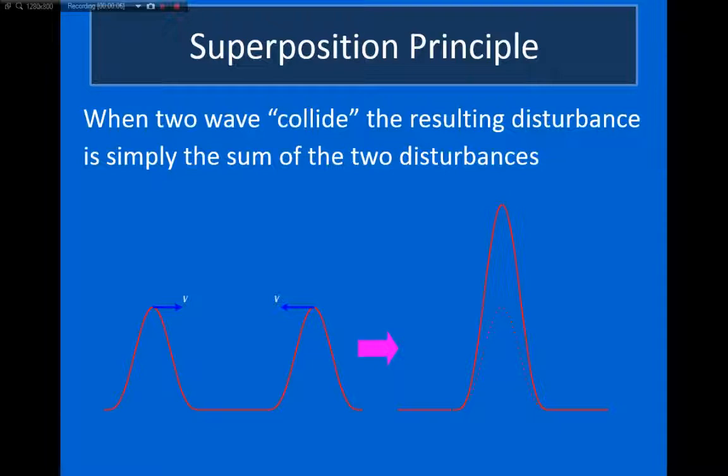The superposition principle tells us what happens when two waves collide. It states that when two waves collide, the resulting disturbance is equal to the sum of the disturbances of the two waves.